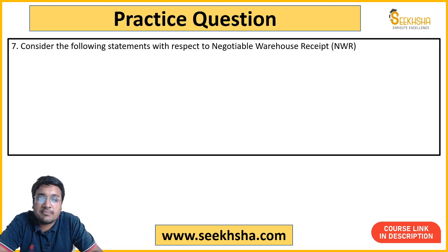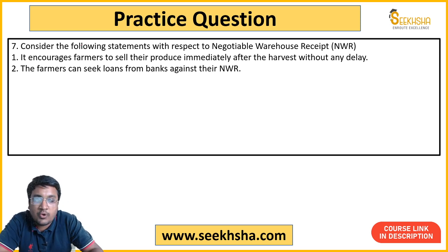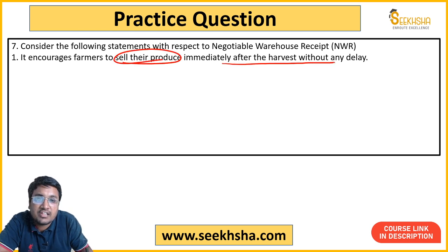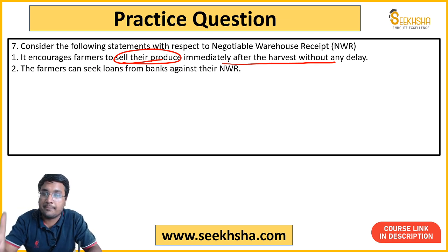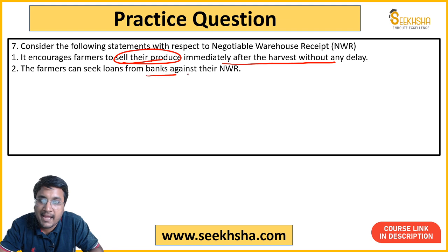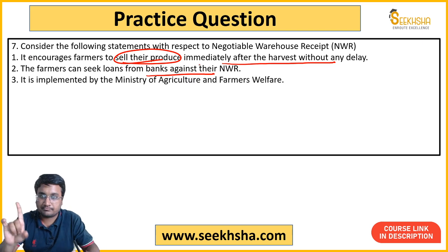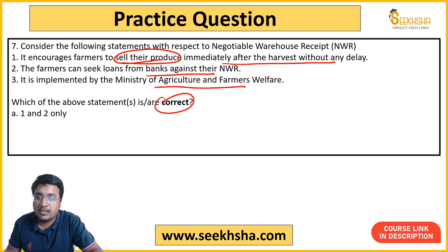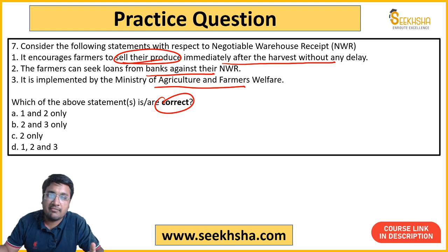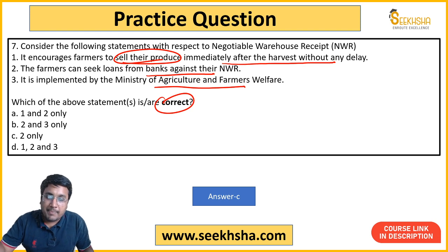Seventh question: Consider the following statements with respect to Negotiable Warehouse Receipt (NWR). Statement 1 says it encourages farmers to sell their produce immediately after harvest without delay. Statement 2 says farmers can seek loans from banks against the NWR. Statement 3 says the Ministry of Agriculture and Farmer Welfare implements it. The correct answer is option C — 2 only. Statement 1 is wrong because NWR is designed to prevent farmers from selling immediately — it does the opposite.